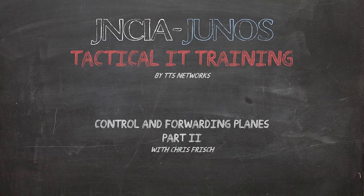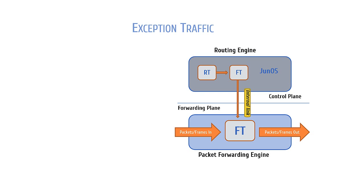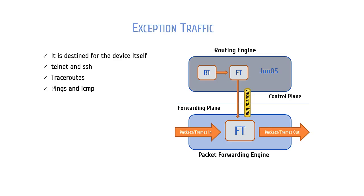Up until this point, we have been talking about transit traffic, or traffic that is passing through the device. Exception traffic is traffic that is destined for the device itself, so we need to know a little bit about how Junos handles exception traffic. Examples of exception traffic would be things like Telnet or SSH sessions, trace routes, pings or replies to traffic originating from the device, routing protocol updates, and packets with the IP options field. Think of exception traffic as traffic that is not passing through the device, but traffic that is going to the device itself.